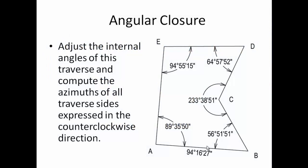Let's work an angular closure problem. In this scenario, we have a five-sided traverse connecting in a closed polygon points A, B, C, D, and E, and the direction of side AB is known, and the angles that you see here that are interior to the polygon are measured angles. Therefore, as the scope at the left says, we're going to adjust the interior angles of this traverse, adjust the errors, and we're going to compute the azimuth of all the traverse sides expressed in the counterclockwise direction.